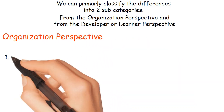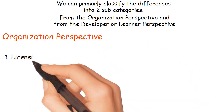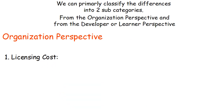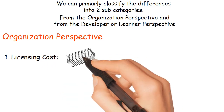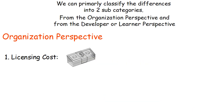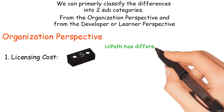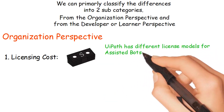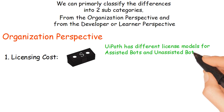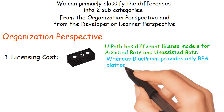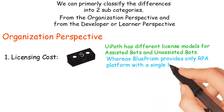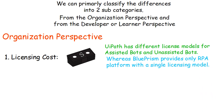Number 1: Licensing Cost. UiPath licensing cost per bot is lesser than Blue Prism. UiPath has different license models for assisted bots and unassisted bots, whereas Blue Prism provides only an RPA platform with a single licensing model.